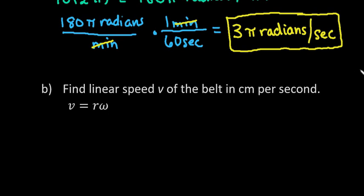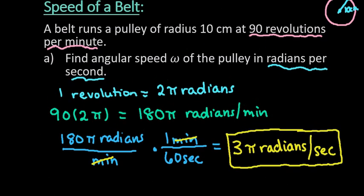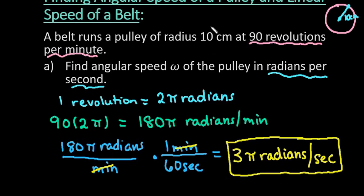Okay, so the radius we're going to get from the original problem, so it tells us that our radius is 10. So that's what we're going to plug in for r, and this is what we are going to use for omega.